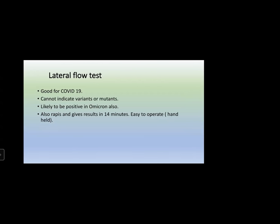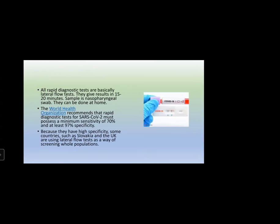Lateral flow tests lack sensitivity but are very specific. They are likely to be positive in Omicron also, because the antibodies embedded detect antigens present in Omicron. They give results in about 14 minutes and are easy to operate. All rapid diagnostic tests are basically lateral flow tests — the antigen flows through the nitrocellulose membrane and reacts with the antibody already embedded. Within 15 minutes, two lines appearing gives a positive result; only the control line appearing is a negative result. If only the test line appears and the control line is absent, the test is invalid.